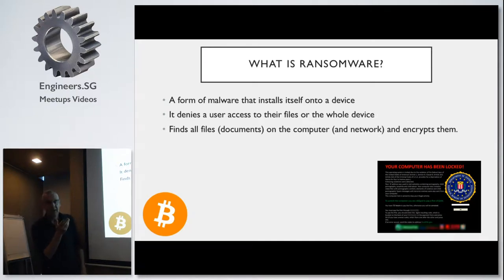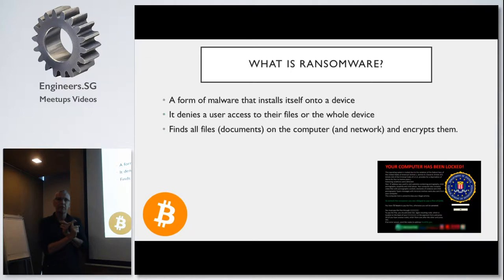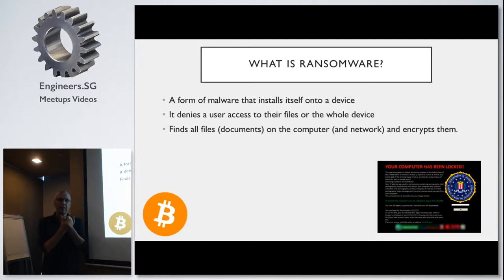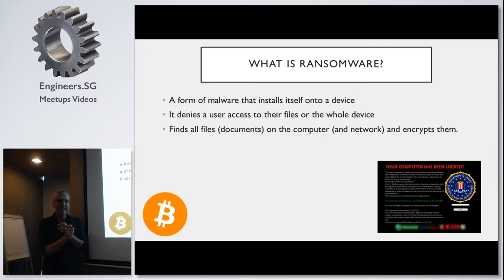It turns out WannaCry wasn't actually that smart — apparently it only looked at My Documents and certain locations. But a smart version would go through all drives on the computer, find all the important files, then move on to the network. For developers, they could find your source code. If they're really smart, I would think about getting into Git repositories and corrupting or deleting things already in your repository — though I don't think that's happening yet.